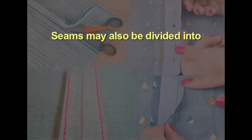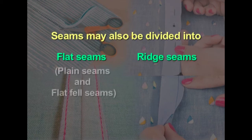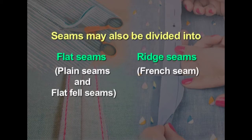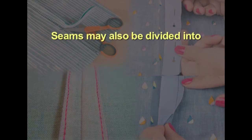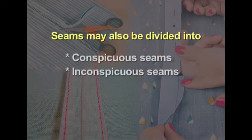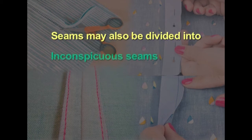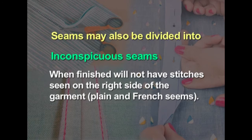Seams can be classified into flat seams and also ridged types. Plain seam and flat fell seam are examples of flat seams. Ridged seams include the front seam and some cord seams. Seams may also be divided into conspicuous and inconspicuous seams. Inconspicuous seams, when finished, will not have stitches seen on the right side of the garment. Examples are plain and French seams.